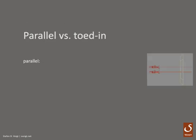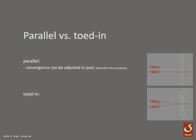So this is a parallel camera setup and this is toed-in. A fine thing about parallel setups is that you can define the convergence in post. For that you just move your left and right eye horizontally together or more apart. With this method you are defining where the zero plane will be. Another advantage of a parallel setup is that the audience can look everywhere in the picture and have a good stereo impression. The only disadvantage is the cropping you have to do for every shot, but this gives you also the freedom of choosing the convergence in post.